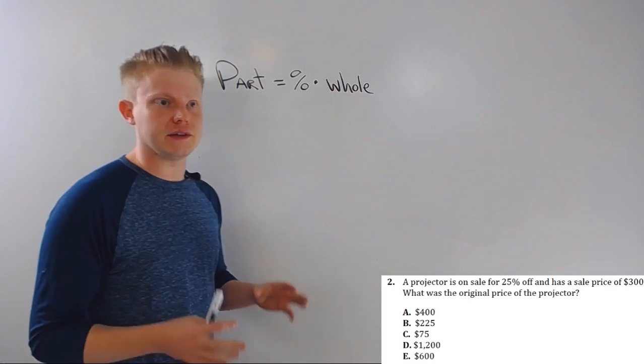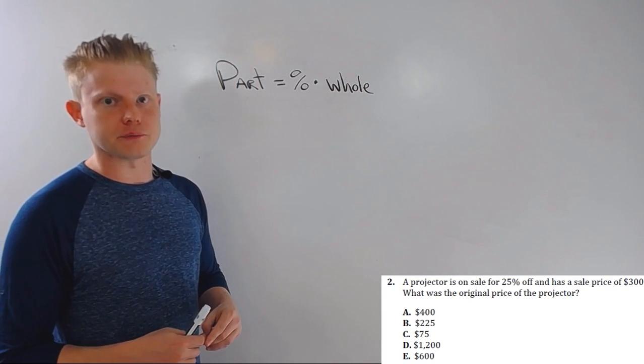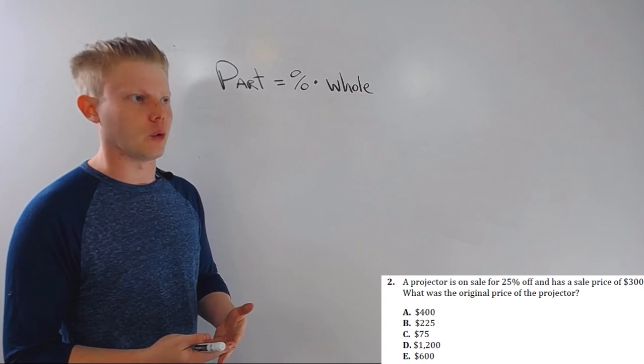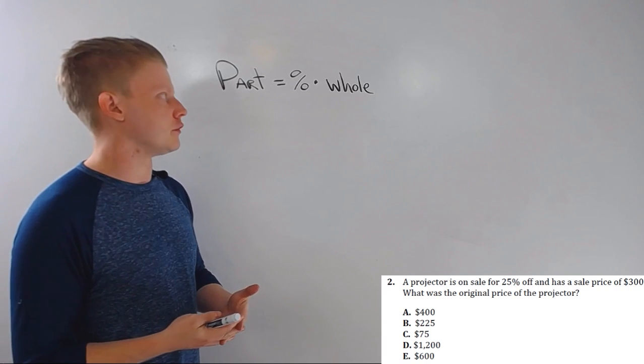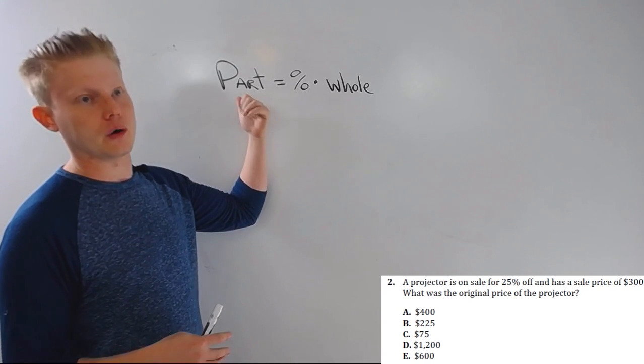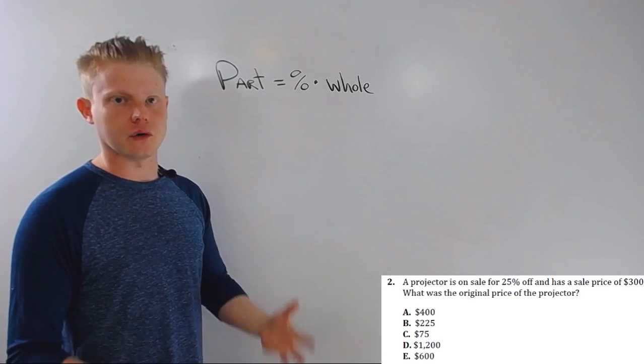Now the ACT typically asks word-based percent problems. They show up in all sorts of different places and take all sorts of different forms, but the steps to solving are still the same. You've got to figure out which part is missing, whether it's the part, the percent, or the whole. Plug in the other two parts and solve.